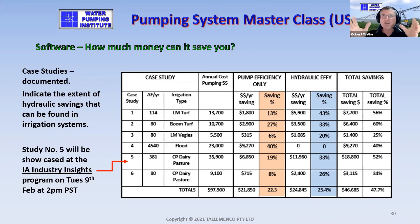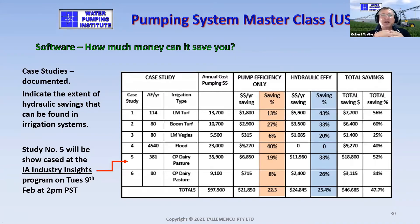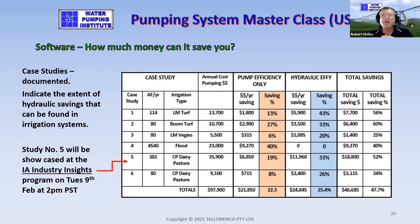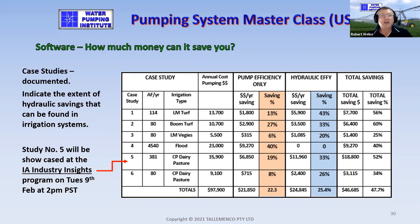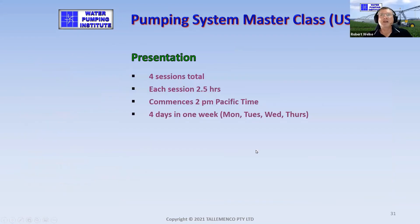Why is that? Essentially because the way we sell products — through a tendering process where we strive for the cheapest price to get the sale — hugely impacts the operating costs of an irrigation system. This course gives you the means to evaluate that and mitigate it.